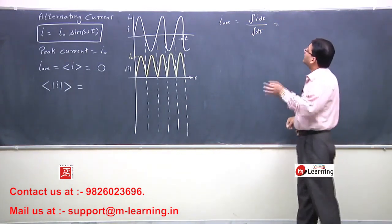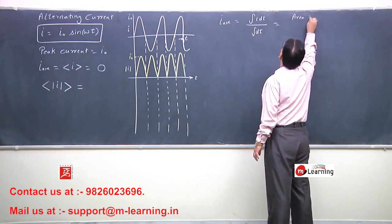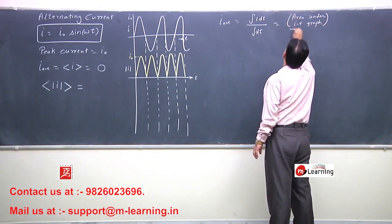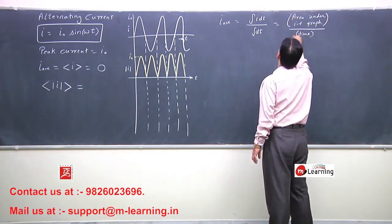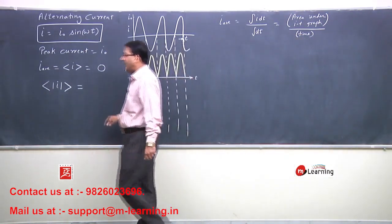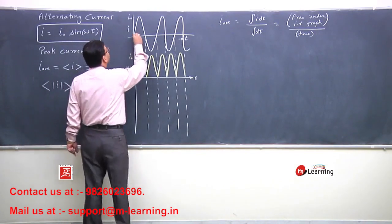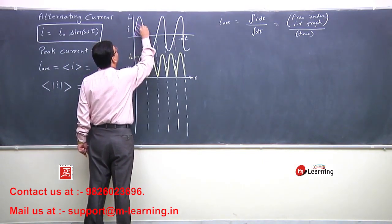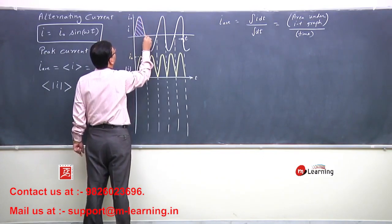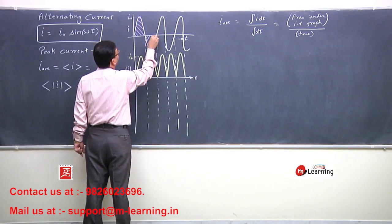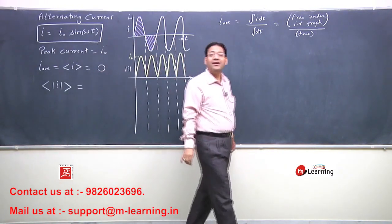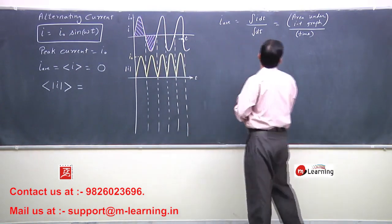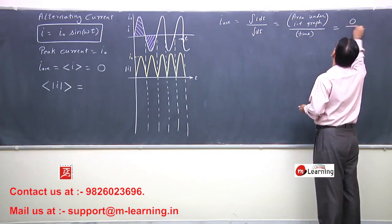We defined it as area under i-t graph upon total time. And area under i-t graph, for first half this area is positive and for second half this area is negative. And as much positive area, equally negative area, so total area in one cycle is zero. Then area enclosed during the cycle is 0 upon time t.